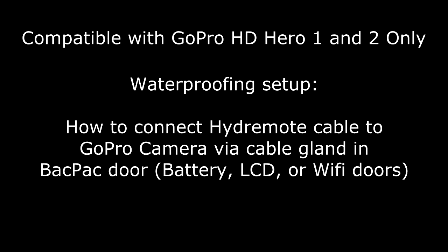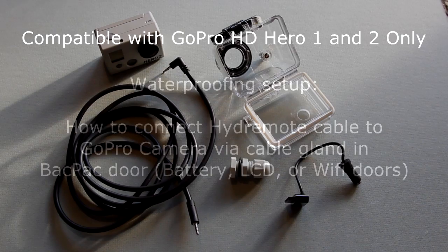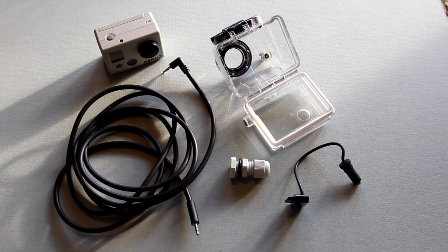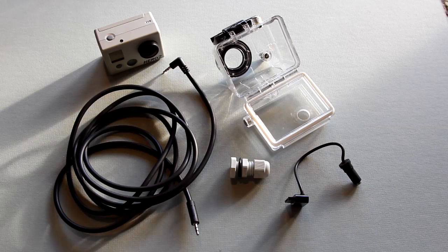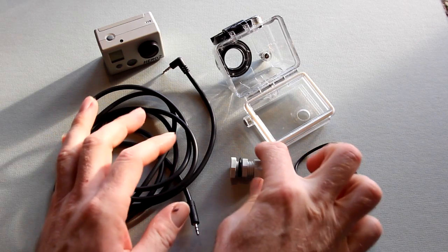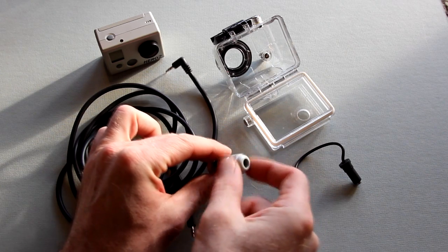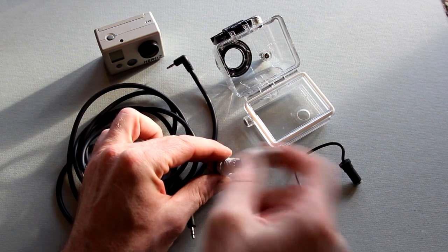Okay, how to waterproof your hydro remote cable system to a GoPro camera using one of GoPro's backpack doors. You'll need a waterproof backpack door. I like to use one of my wrist housing backpack doors from the LCD screen setup because I don't use the wrist housing, and that backpack door would otherwise go unused.